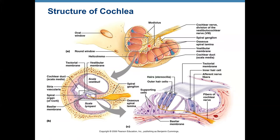Regarding the structure of the cochlea: the inner ear includes a bony labyrinth, and inside it a membranous part, and inside that membranous part is the sensory structure. In the cochlea we have the cochlear duct and scala vestibuli and scala tympani. Inside the cochlear duct is a special structure called the organ of Corti — this is our sensory part. At the bottom is the basilar membrane, which vibrates up and down.